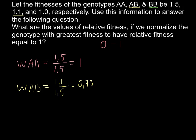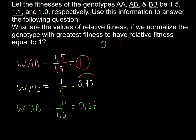For the last genotype, BB, with a fitness value of 1.0, we calculate W_BB = 1.0 divided by 1.5, and the answer is 0.67 (rounded). So our three relative fitness values are: W_AA = 1, W_AB = 0.73, and W_BB = 0.67. We have brought all numbers between 0 and 1 while preserving all the relationships between them.